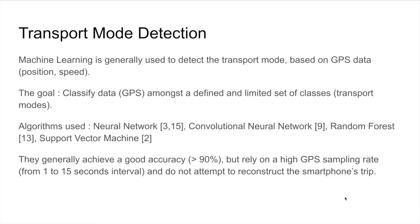We've seen multiple types of machine learning algorithms used, such as neural networks, convolutional neural networks, random forests, support vector machines, etc. They generally achieve fairly good accuracy—higher than 90 percent—but the main problem is that they rely on a high sampling rate of GPS data, even higher than trip reconstruction. Most of them will use a sampling rate ranging from 1 to 15 seconds.